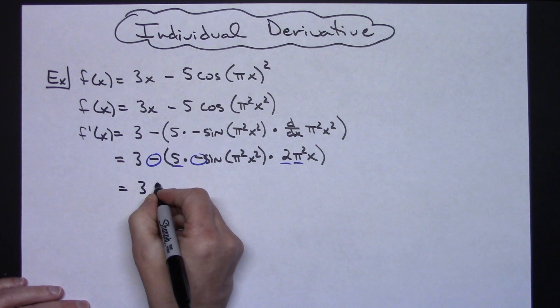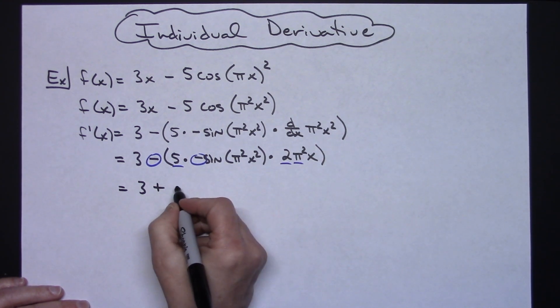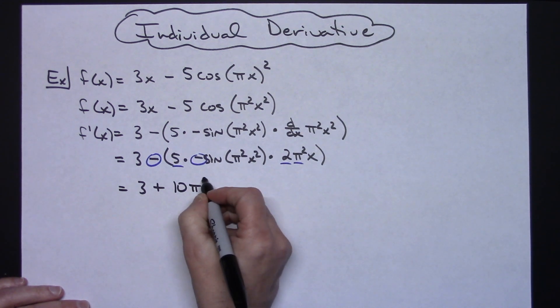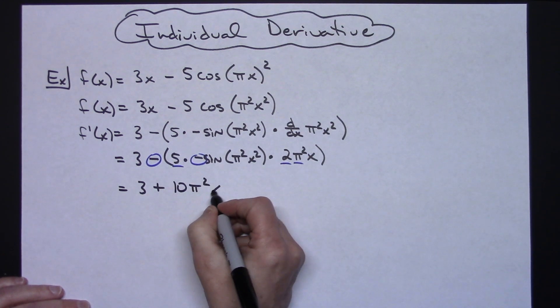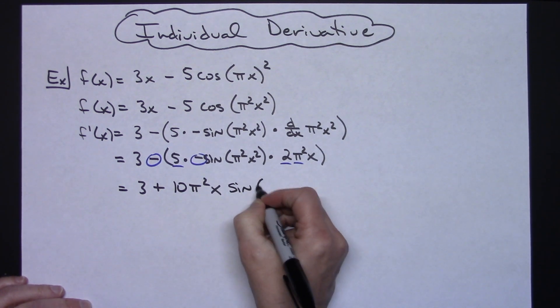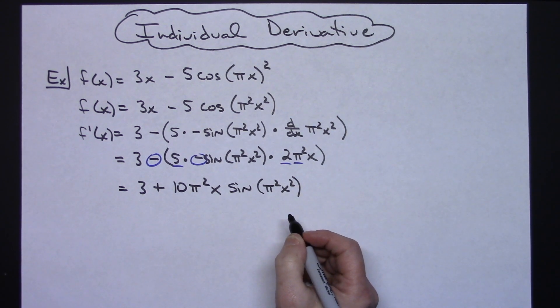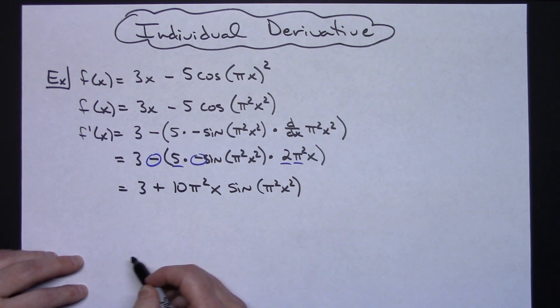So I'm going to have a 3 plus 2 times 5 is 10 with that pi squared so 10 pi squared and then let's go ahead and pull the x out in front as well and then sine of the pi squared x squared. Alright and that's perfectly fine to leave as an answer right like that.